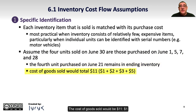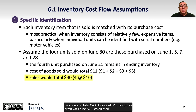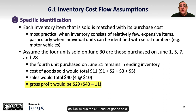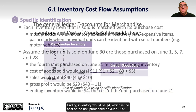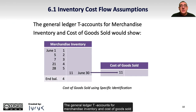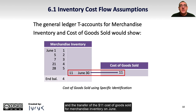The cost of goods sold would be $11 based on their cost. Sales would total $40, so gross profit would be $29, calculated as $40 minus the $11 cost of goods sold. Ending inventory would be $4, which is the cost of the unit purchased on June 21. The general ledger T-accounts for merchandise inventory and cost of goods sold would show each of the purchases as debits to the merchandise inventory account and the transfer of the $11 cost of goods sold on June 30.